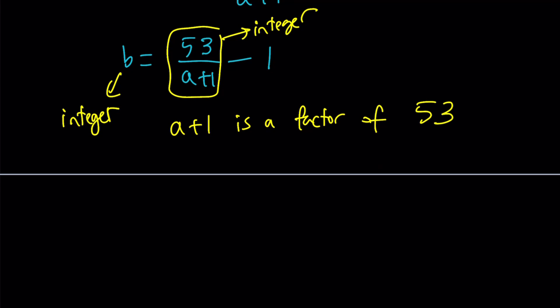Let's check. a plus 1 can be 53, which means a is 52. Or a plus 1 can be negative 53, which means a is going to be negative 54. Or a plus 1 can be 1, which means a is 0. Or a plus 1 can be negative 1. All these numbers go into 53. And in this case, a will be negative 2. So we get four different values for a.